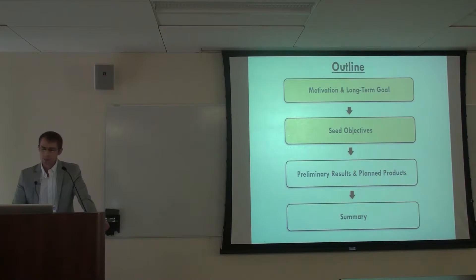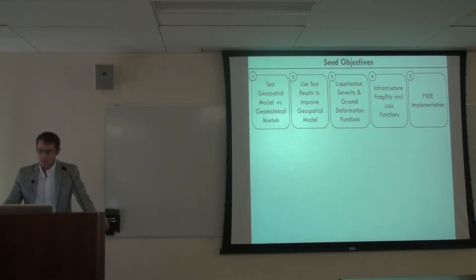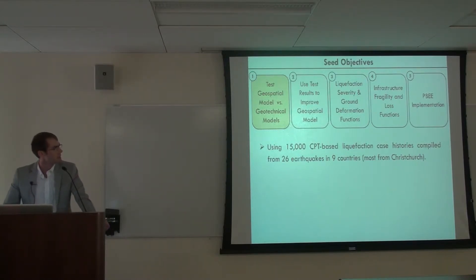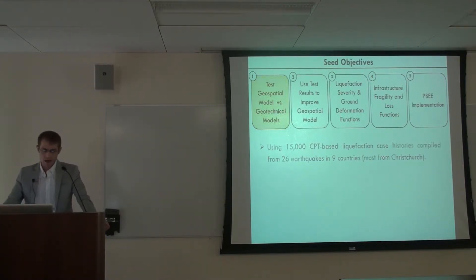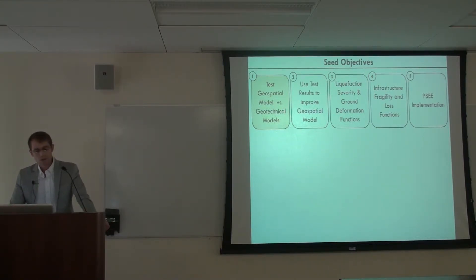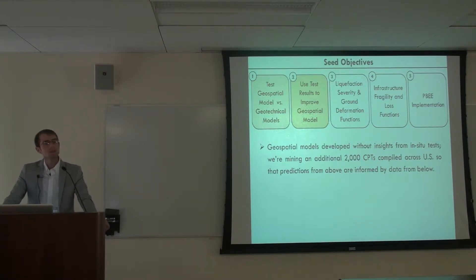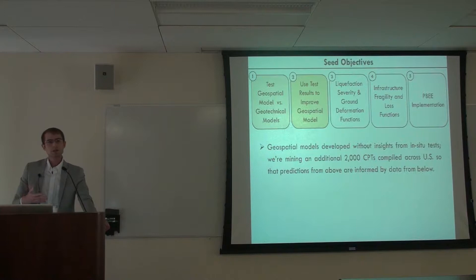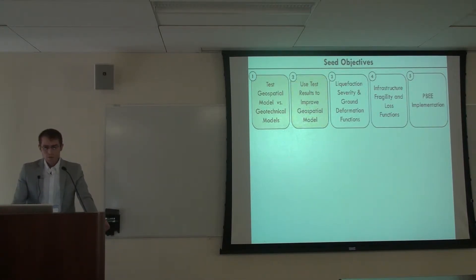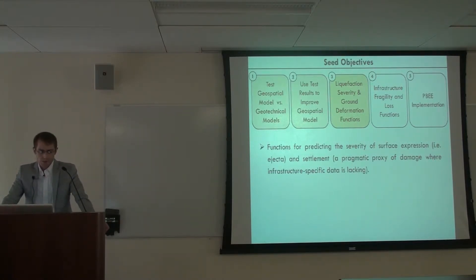Moving on to the specific objectives of the seed project — there are five. The first is to test the geospatial models against geotechnical models using 15,000 CPT-based case histories compiled from 26 earthquakes and nine countries, though mostly from Christchurch. Second, we'll use those test results to improve the geospatial models, which were actually developed without any insights from the subsurface. We've compiled 2,000 CPTs from across the US — the idea being: let's not just blindly make predictions from above, but inform those predictions with data from below.